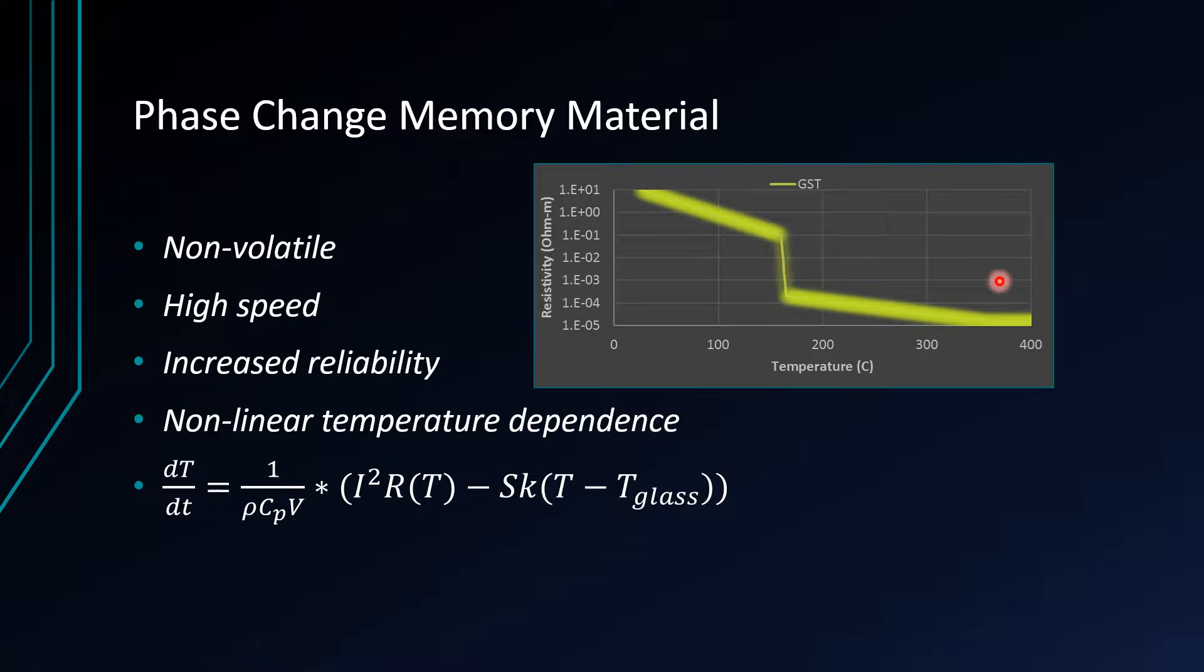Our graph here is of a material called GST, which is a germanium, antimony, and tellurium compound. It undergoes a solid state phase change around 160 degrees Celsius. This is a logarithmic graph with a log scale on the y-axis. As you increase the temperature, it's logarithmically linear there. Then you reach the phase change point right here where you have a sharp decrease in the resistivity of the material, and once again it returns to the same pattern as before.